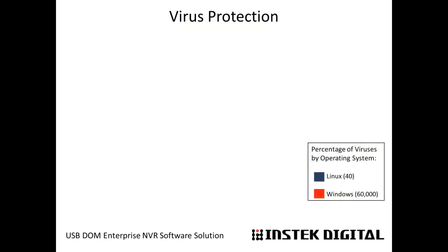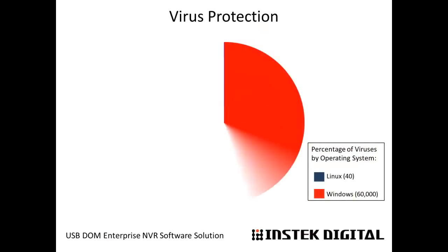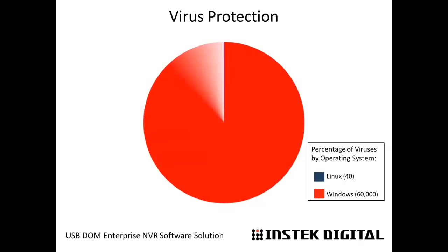There are 40 known viruses written for Linux. In contrast, Windows is susceptible to over 60,000 known viruses. Linux is an inherently secure operating system, and our version of Linux has been further customized to ensure that our software solution runs on the most secure operating system available.